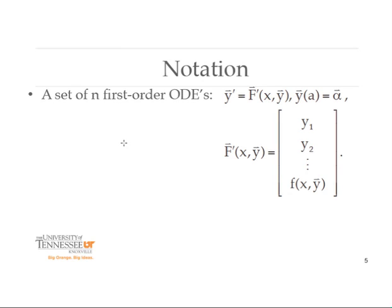Just to make sure we understand the notation: we use vector representations because y could be multidimensional — not always one dimension, but a function of many independent variables. So we use the notation Y prime equals F of x, Y, where both F and Y are vectors. We specify the initial vector Y at a equal to a vector alpha. We can represent F of x, Y in a form that writes it as a set of n first-order differential equations, just as we did before with those variable substitutions.